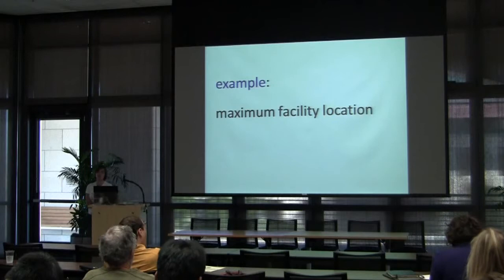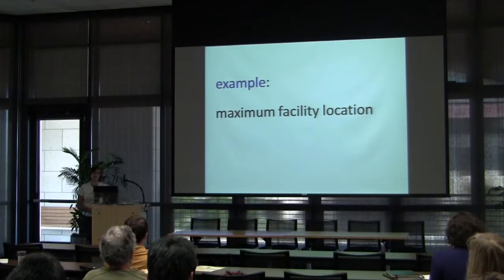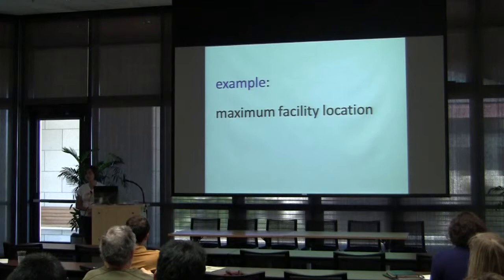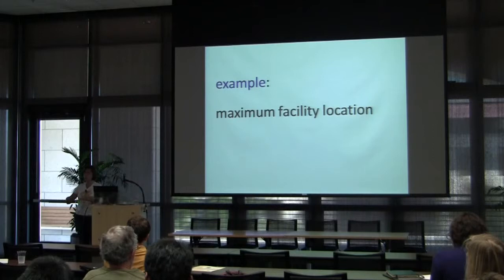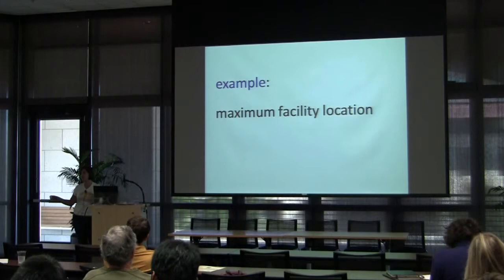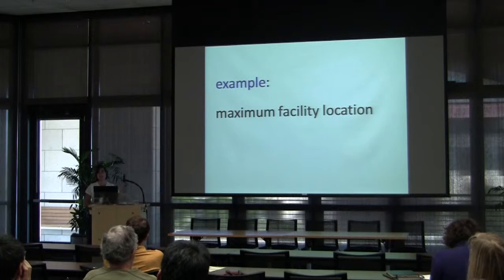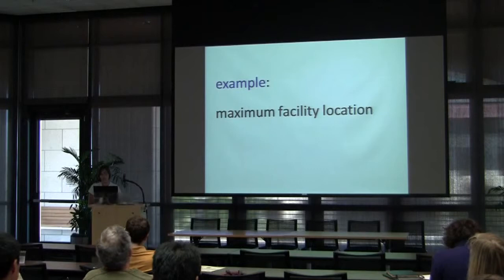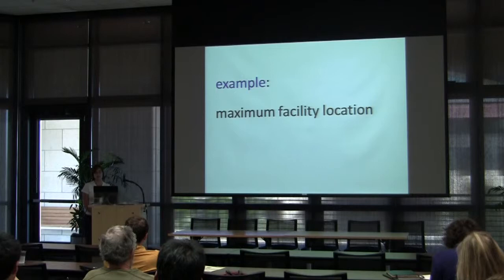To motivate the framework, I'll use the problem of maximum facility location. The original motivation came from allocating banner ads at Microsoft: we needed to decide which advertisers to accept and guarantee them a supply of impressions from different types of people. This problem was shown to be hard to approximate, but we still needed an algorithm, so we developed this framework. Subsequently, Feige and Reichman used similar PASS guidelines to design heuristics for the maximum independent set problem.